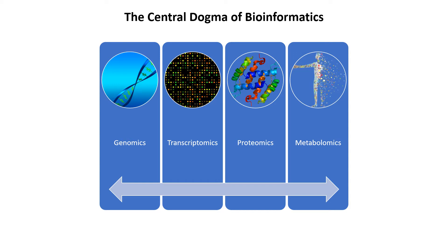Proteomics is the large-scale study of proteins including their structure and function within a cell system and organism. We also have metabolomics, which is the study of global metabolite profiles in a system — that system can be a cell, a tissue, or an organism — under a set of given conditions. So we can say there is a central dogma of bioinformatics.